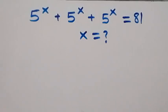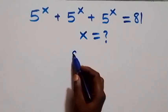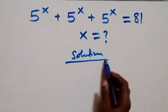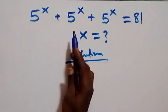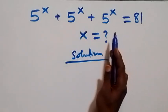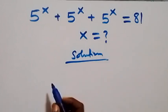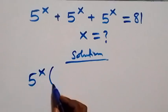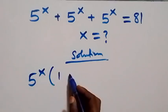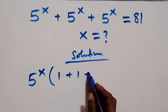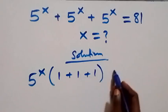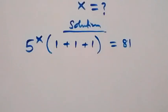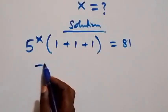Hello, you are welcome. How to solve this nice exponential equation. We have 5 raised to power x plus 5 raised to power x plus 5 raised to power x equals 81. Here, 5 raised to power x is common on the left, so we factor it out giving us 1 plus 1 plus 1 inside the brackets, which equals 81 on the right side.